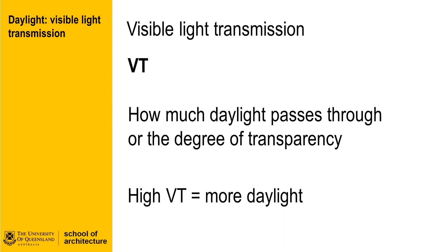Innovations in cost-effective film-based photovoltaics may also see the increased use of solar energy generation on vertical as well as horizontal surfaces. Getting the balance right between heat gain and daylight is difficult, though with double facade and dynamic shading systems, we are seeing more and more clear glass being used to help boost the amount of daylight inside a building.